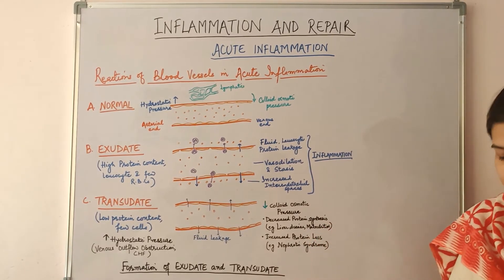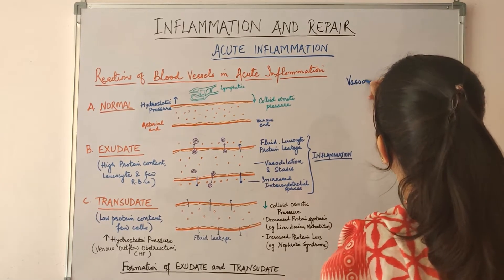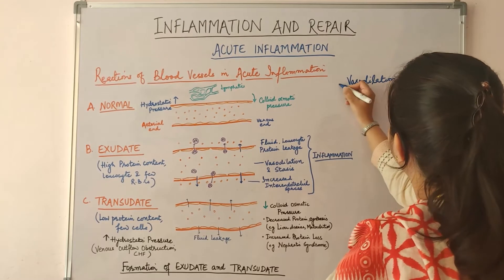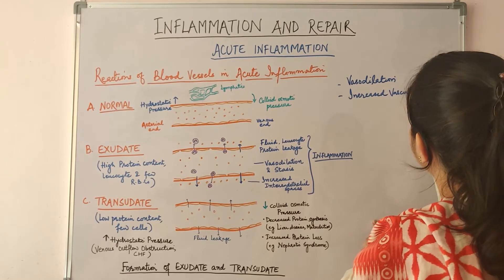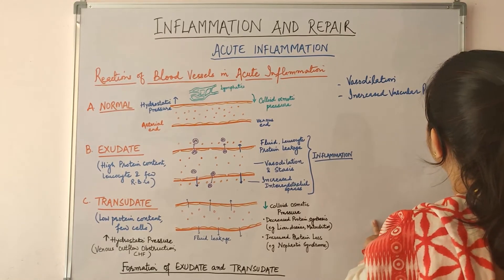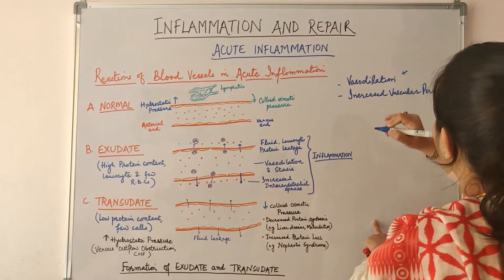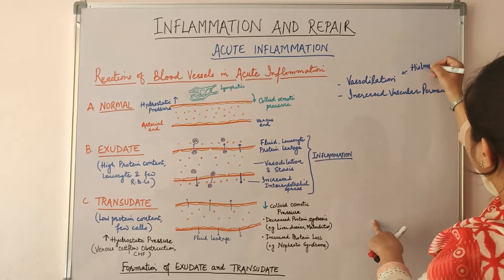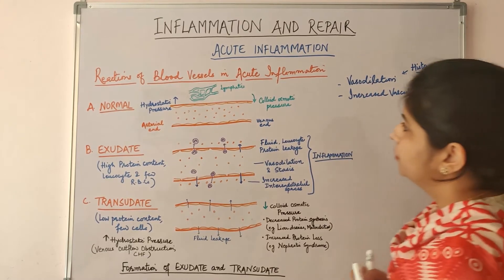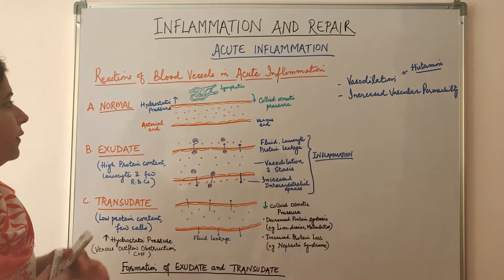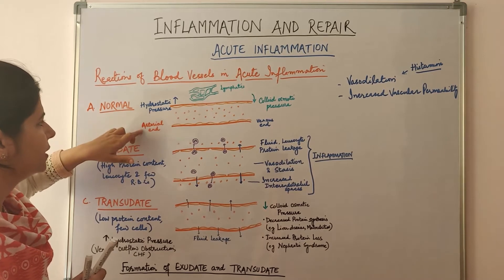The vascular response in acute inflammation is characterized by vasodilation and increased vascular permeability. Vasodilation is mediated by histamine and other mediators. Normally, if we look at the capillary bed, there is increased hydrostatic pressure at the arterial end, whereas the hydrostatic pressure at the venous end is lower.